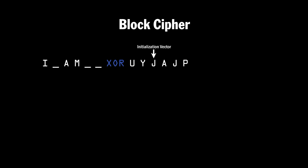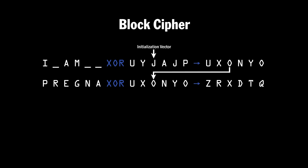So we'll create a random number called an initialization vector, which is the same length as our block. This does not have to be kept secret, so Alice can send it to Bob right along with the encrypted message. The first block is XORed with this initialization vector — similar to what we did with the one-time pad above — and then the result of that is encrypted with a secret key.